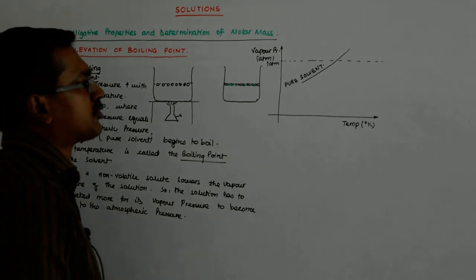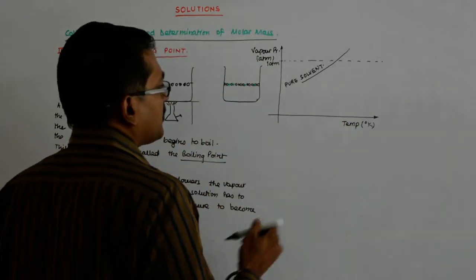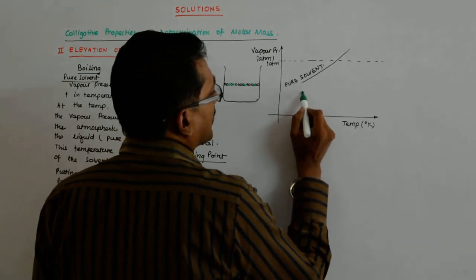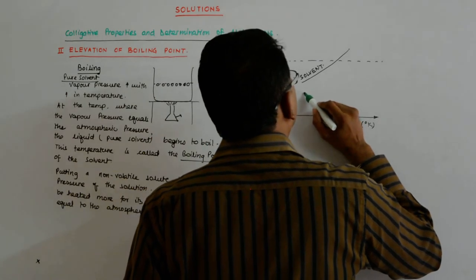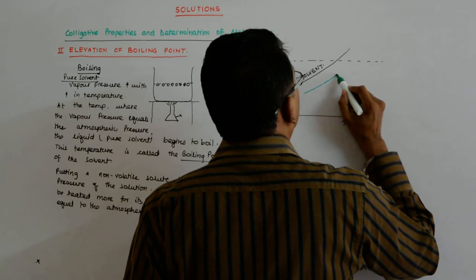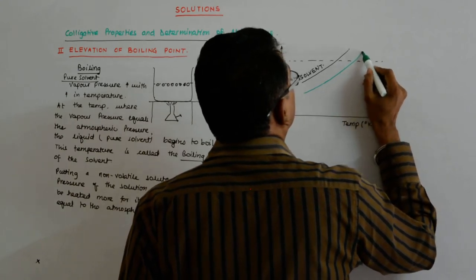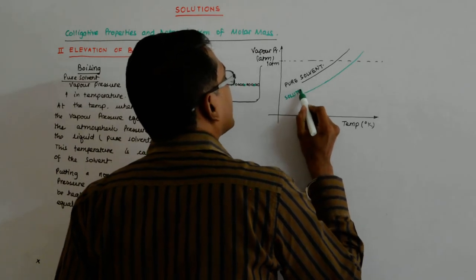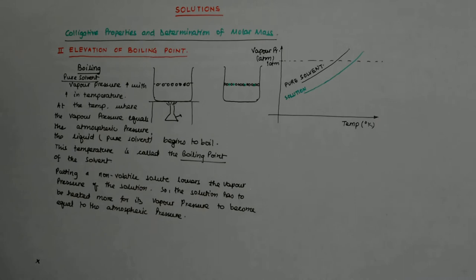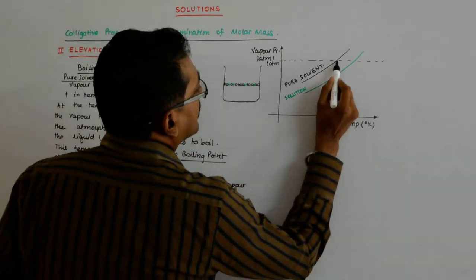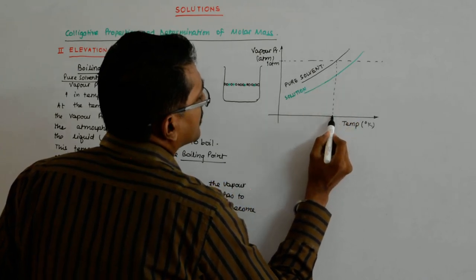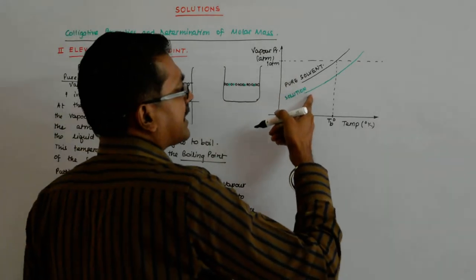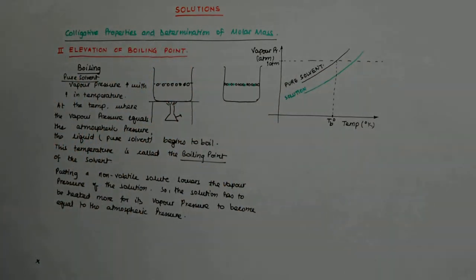Now, if I have a solution with some non-volatile solute added, at every temperature point the vapor pressure goes down by some amount. So the solution curve lies below the pure solvent curve. The solution curve cuts the one atmosphere line at a higher temperature — it has to.